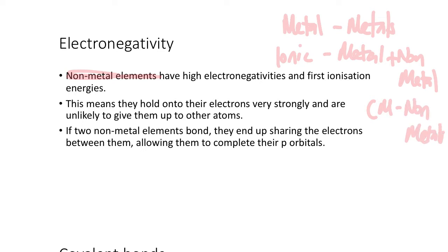What makes non-metals non-metals is that they have high electronegativities, that's the characteristic that gives non-metal elements their properties. They have high first ionization energies, which means that they require a lot of energy to remove their first electron. This means that they hold on to their electrons very strongly and they are unlikely to give them up.